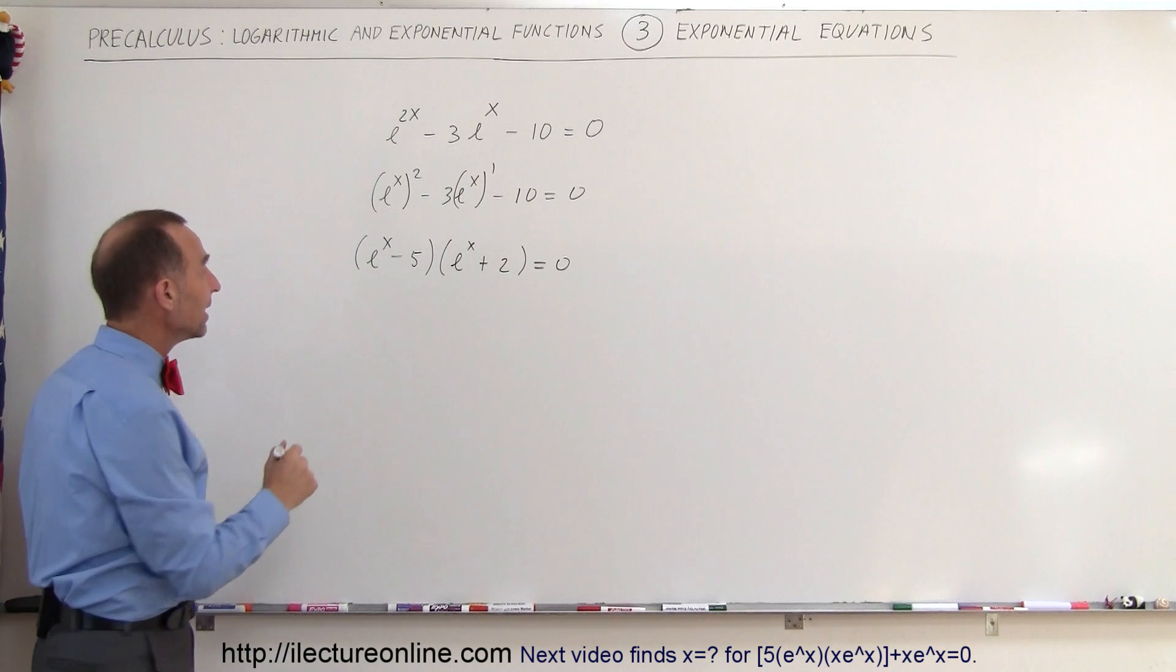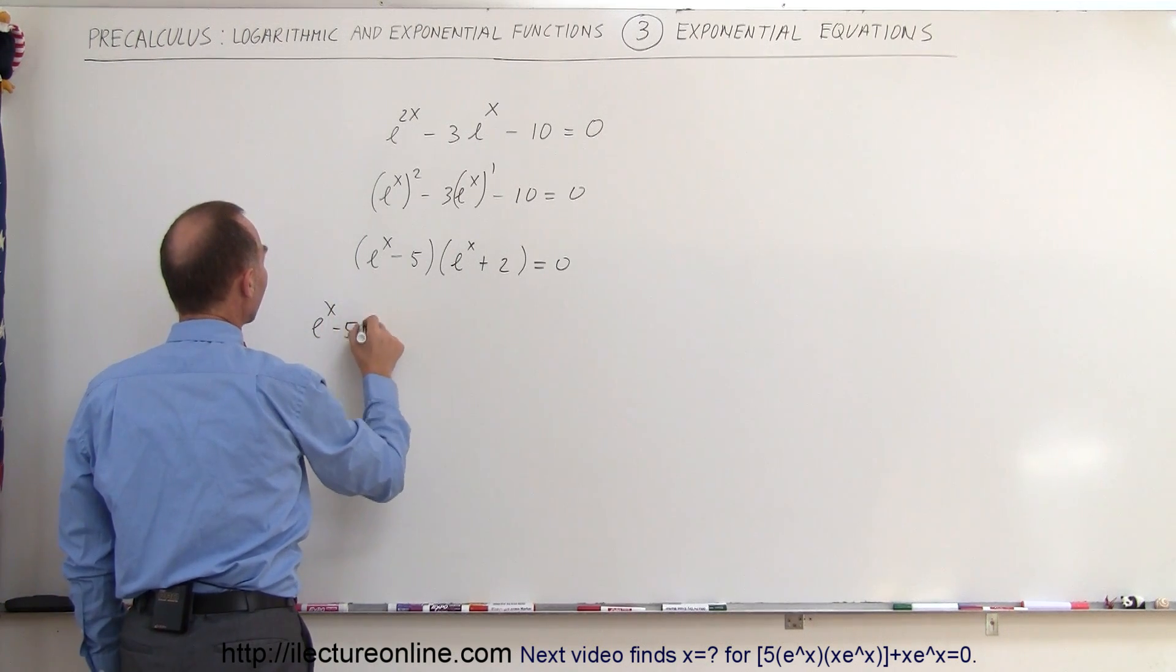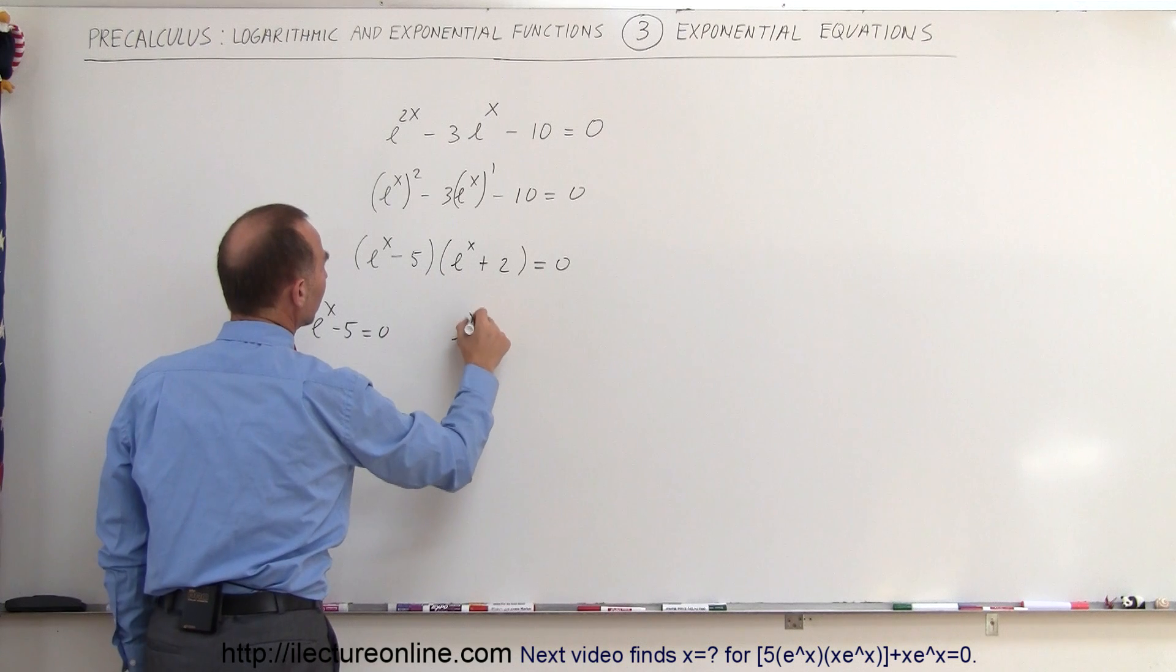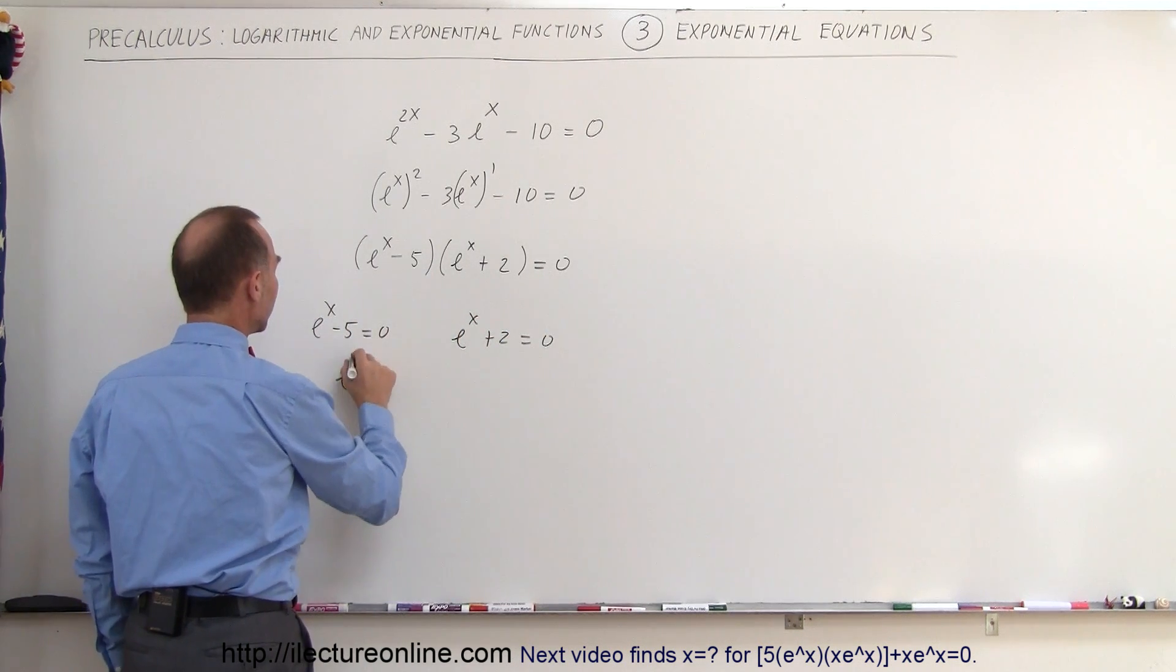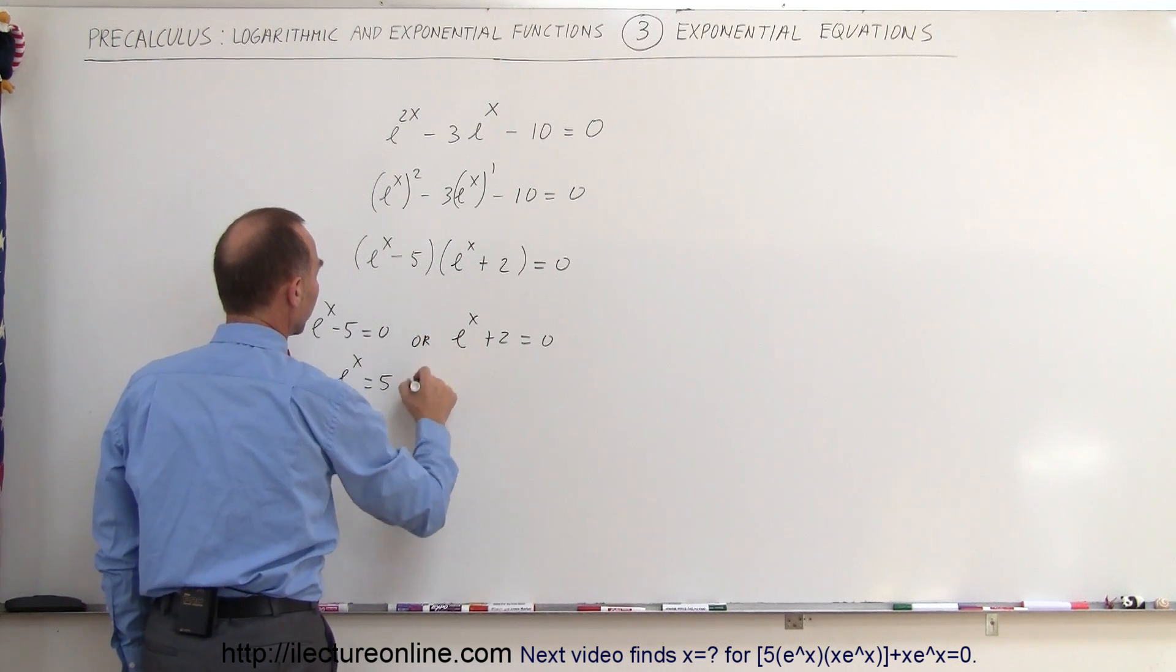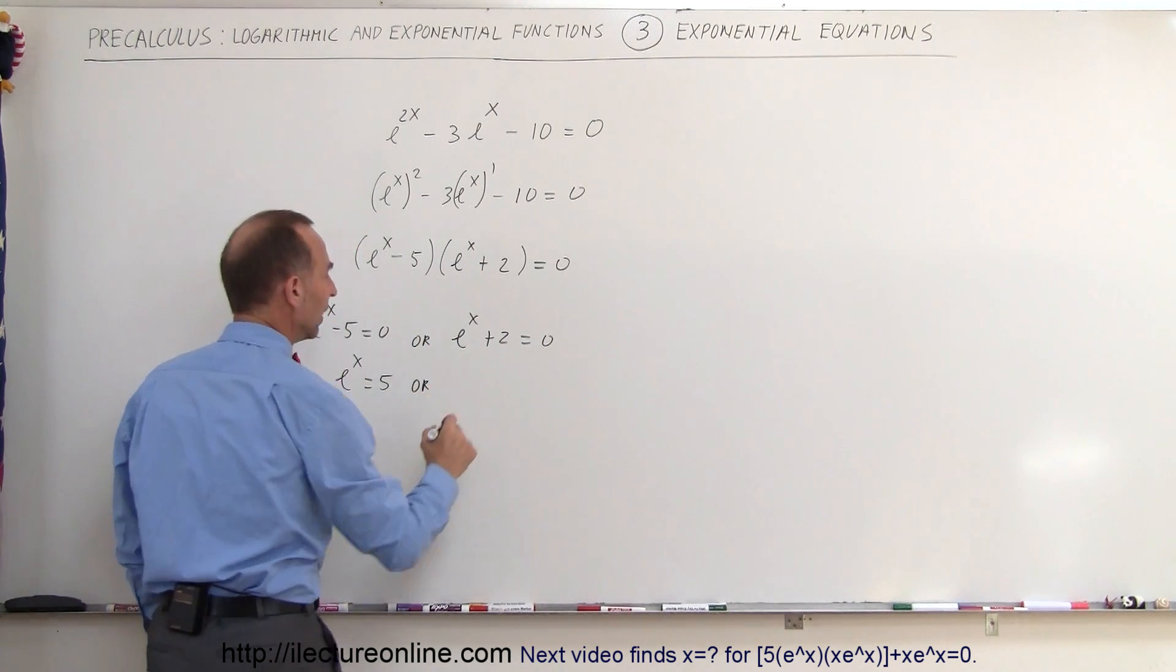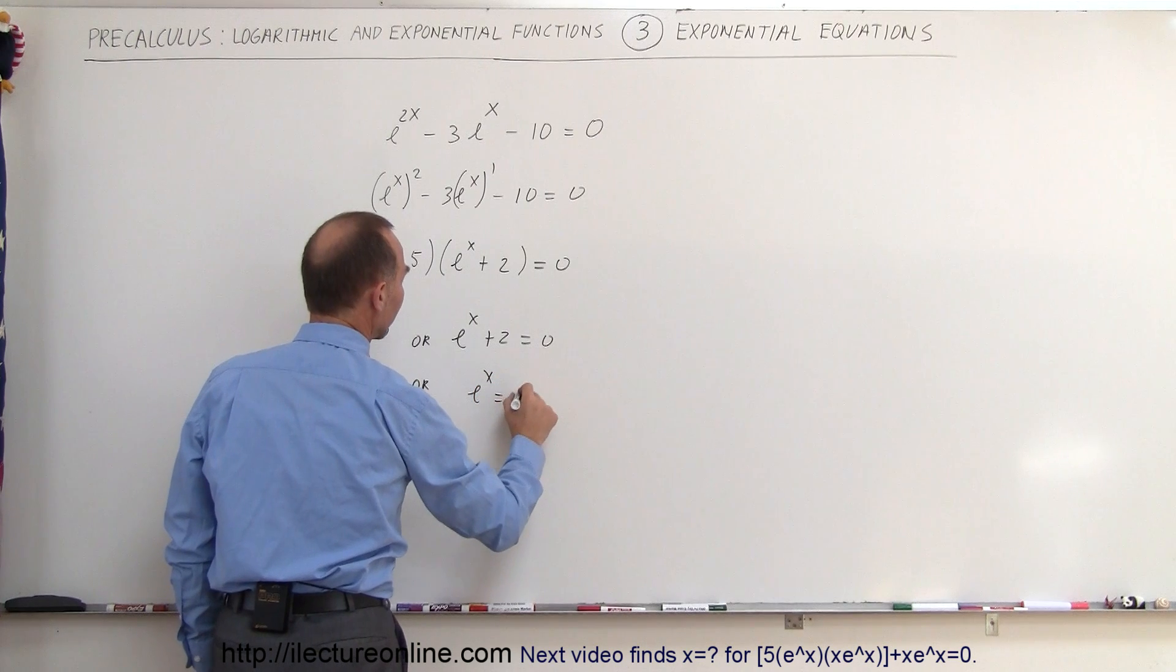So that means that either e to the x minus 5 equals 0, or e to the x plus 2 equals 0. Which means that e to the x equals 5, or—and I should put an 'or' because we cannot be at the same time—e to the x equals negative 2.